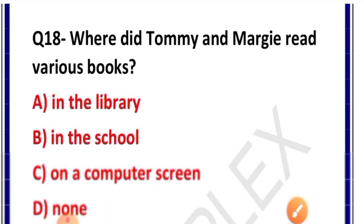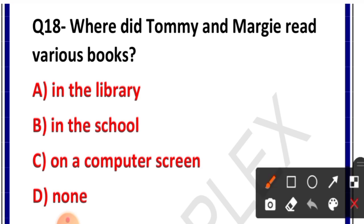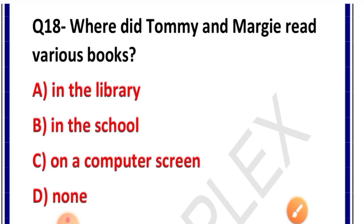Question number 18: Where did Tommy and Margie read various books? Options: A. In the library, B. In the school, C. On a computer screen, D. None. Correct answer is option C — on a computer screen. Tommy and Margie had many books on the computer screen; they studied e-books and tally books there.